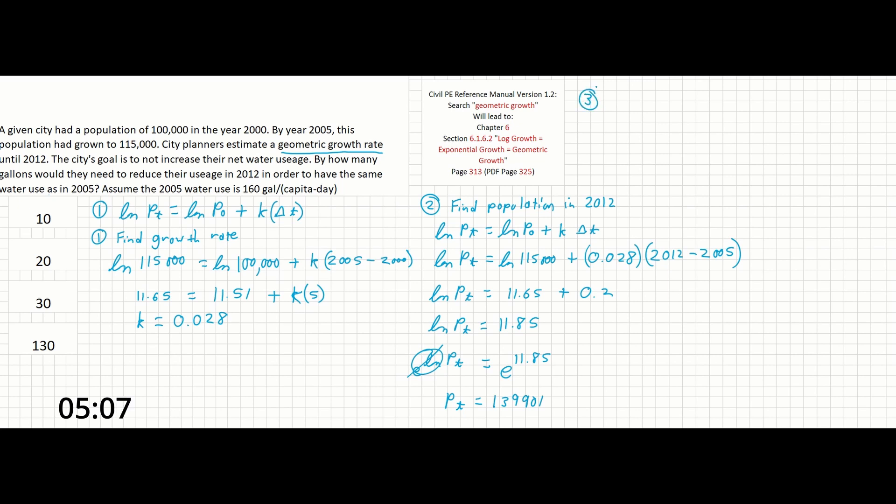So step three, now that we know our new population, we can determine how much the water use needs to be reduced in order to not change from 2005 to 2012. So the problem gives us our current water use of 160 gallons per capita day. And from here we can just figure out the difference in population as a percent. And our units are still gallon per capita day. So this is what the new water use would have to be in order for it to remain unchanged from the previous year.